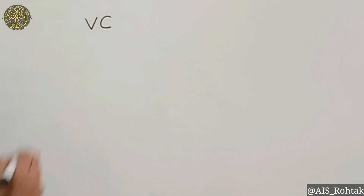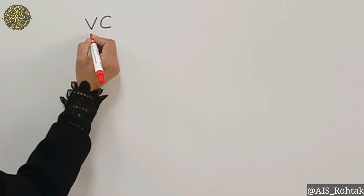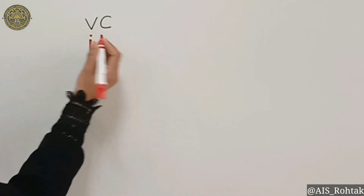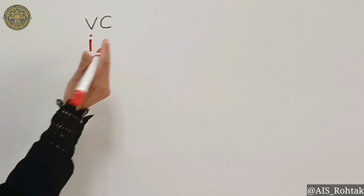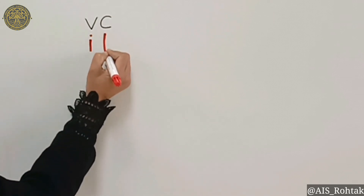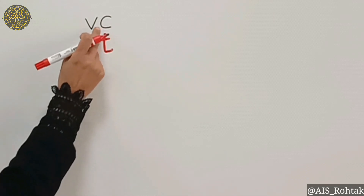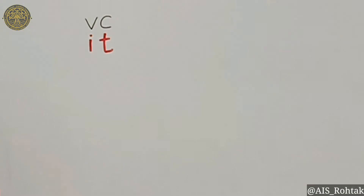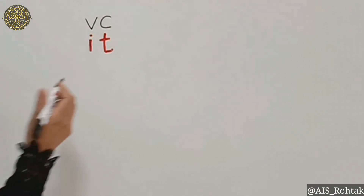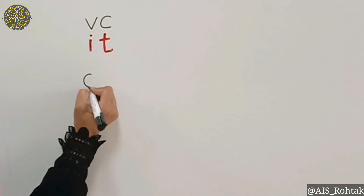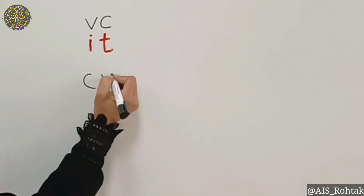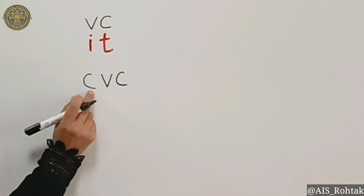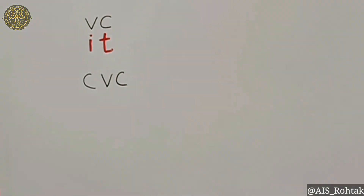We see that V is for vowel, and C is for consonant. When I add a consonant before 'it', it will become a CVC word.